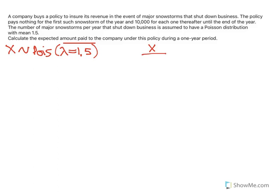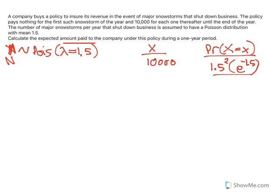So we can start with 2 snowstorms, in which case we'll pay $10,000. Nothing for the first one, and then $10,000 for the next one. So the probability that there are 2 snowstorms... Actually, I'll call X the payment. I'll change. This won't be X. I'll call this N. That's the number of snowstorms. So the probability that we pay out 10,000 means that N has to equal 2. There needs to be 2 snowstorms in that case. So that'll be 1.5 to the power of 2 times e to the negative 1.5 over 2 factorial.